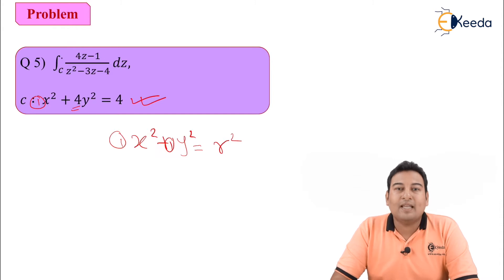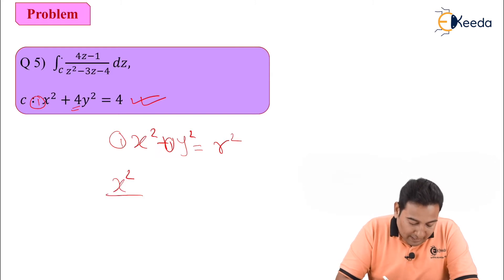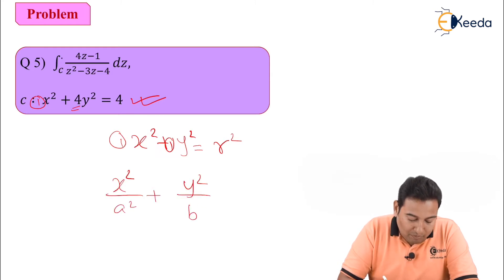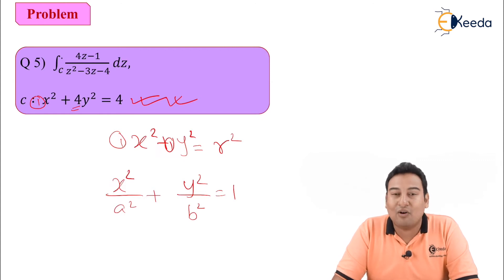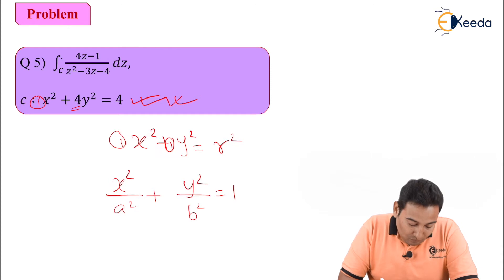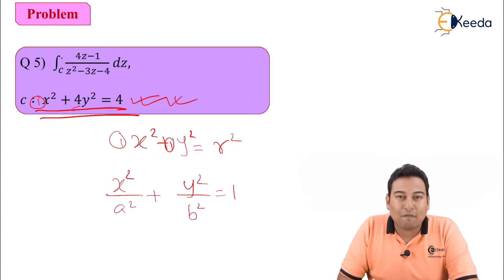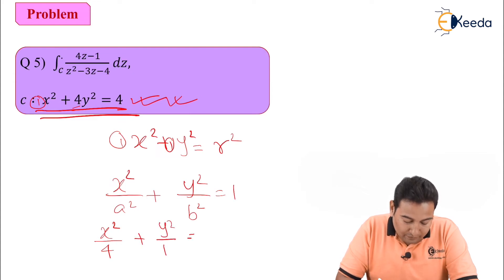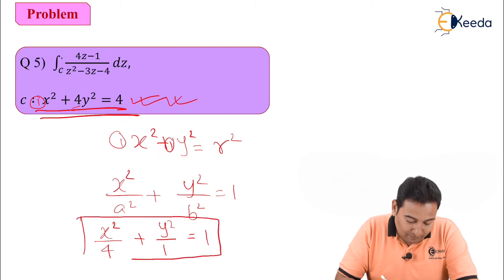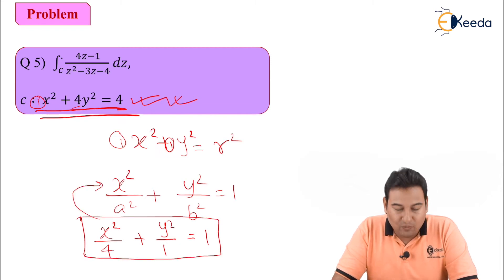So it should be very clear that this equation is actually an ellipse. The equation of an ellipse is x²/a² + y²/b² = 1. You might think the given equation doesn't look like this, but we can convert it. If we divide the given equation by 4, we get x²/4 + y²/1 = 1, which is exactly in the form of an ellipse.